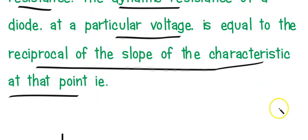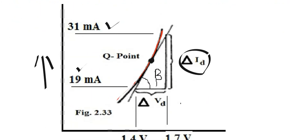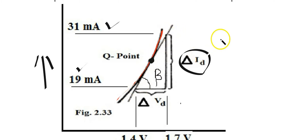So we are finding dynamic resistance. Look — this is the characteristics curve, and we are interested at a specific point. For example, we draw a tangent to the curve, and for that tangent we find the slope. The slope — tan(β) — will be delta_I over delta_V, which shows the conductance, so to find the resistance we take the reciprocal of the slope.